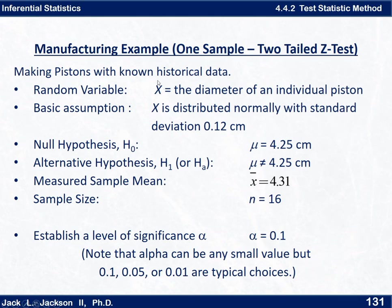Here's how it works. Our random variable x is the diameter of an individual piston, and x is distributed normally with standard deviation 0.12. The null hypothesis is that the mean of the population is 4.25, and the alternative hypothesis H1 or HA is that mu is not equal to 4.25. The not equal to corresponds to two tails, and we'll see that in a minute. The measured sample mean is x-bar which is 4.31, the sample size is 16, and we need to establish a significance level alpha. In this case let's use an alpha of 0.1. Alpha can be any small value but it's typically either 0.1, 0.05, or 0.01.